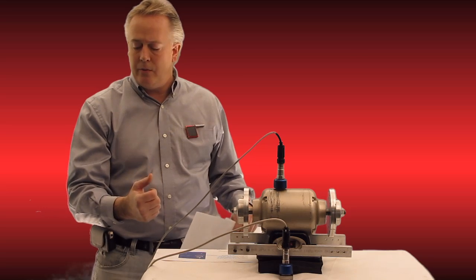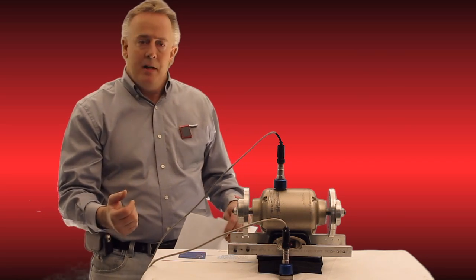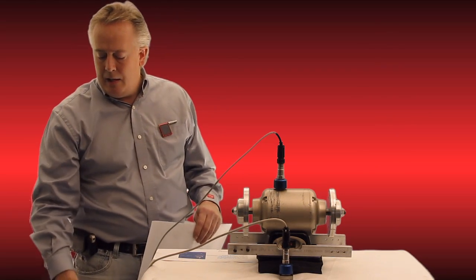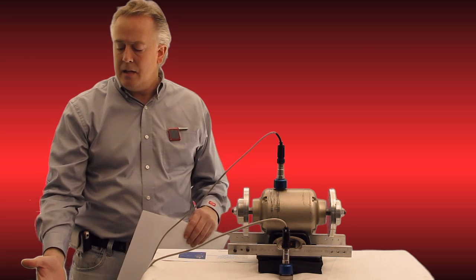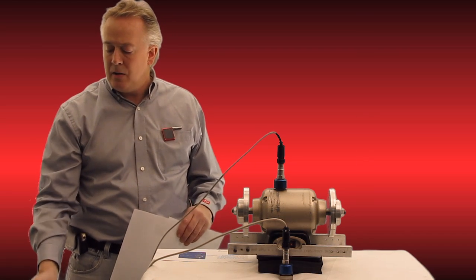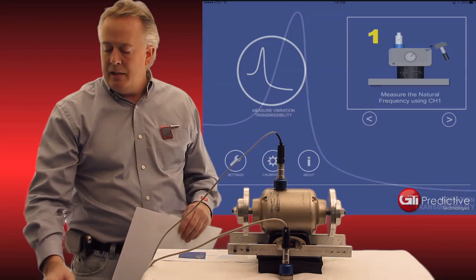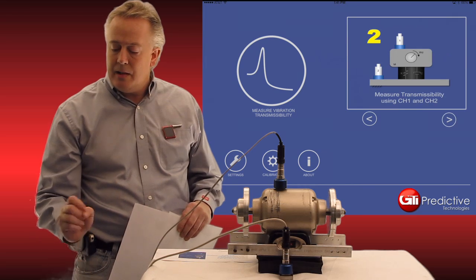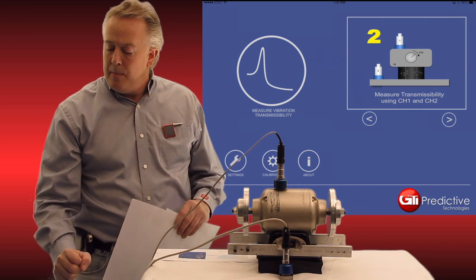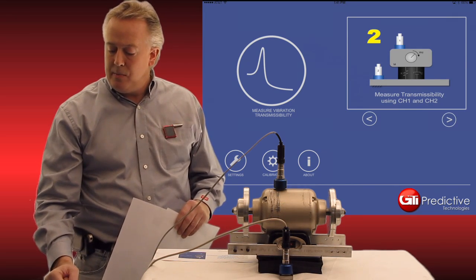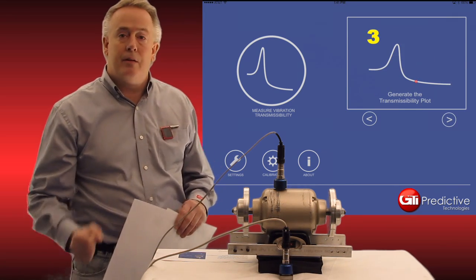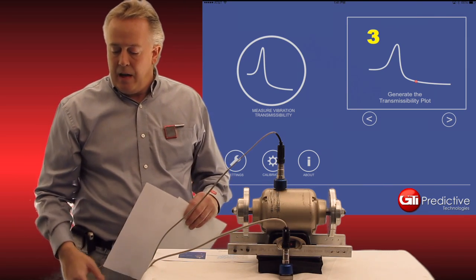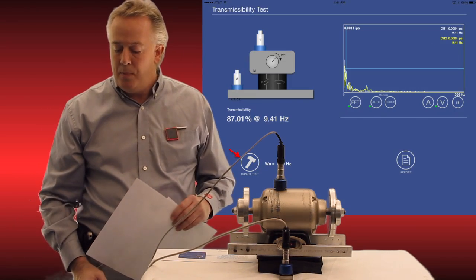I'm also going to determine whether I'm approaching the natural frequency. I'm going to go right to the video here and show you what it looks like on the iPad. I'm going to open the app up, and immediately on your right you're going to see 'measuring the natural frequency' — that's what we're going to do first. Second, we're going to measure the transmissibility, and then we're going to generate the plot. We just tap on it and it opens up.